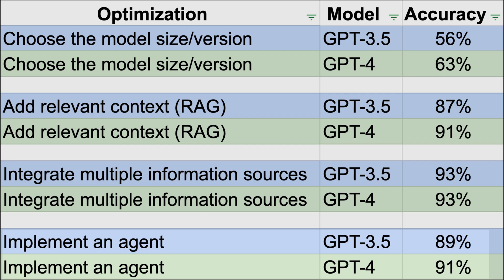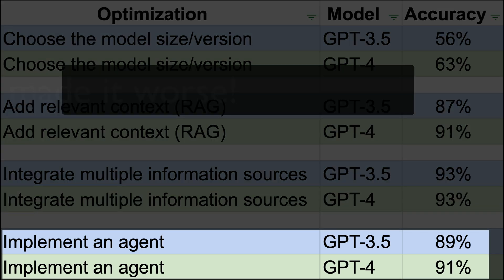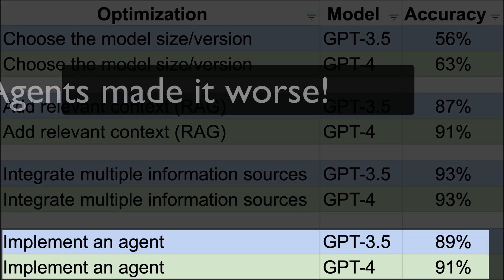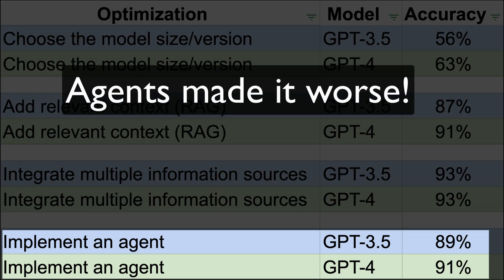Finally, we implemented an agent. The agents performed additional searches over regulations or definitions. They struggled to improve performance, and results actually degraded slightly for both models. These are the results of our study.